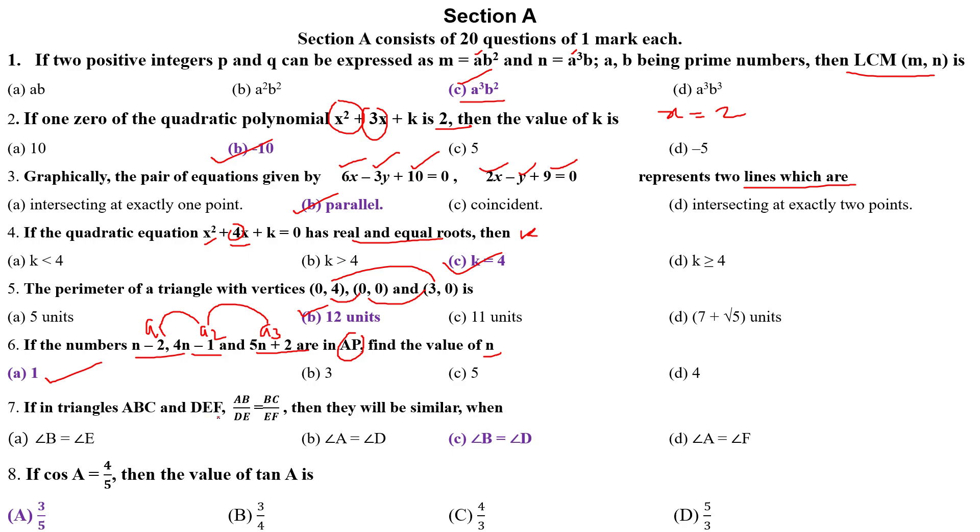If in triangle ABC and DEF, AB upon DE, BC upon EF, then they will be similar when? You see angle B equals angle D. Why? Because if two corresponding sides are in the same ratio and their included angle is equal, therefore by SAS similarity criterion these two triangles will be similar. The included angle must be equal. Option C is the correct answer.